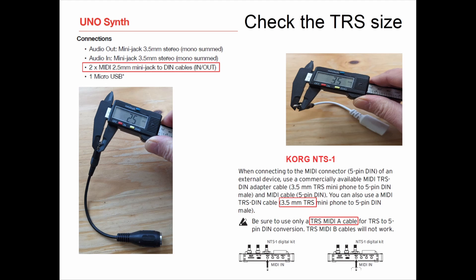If you look in your manual, for example, right here out of the IK Multimedia Uno Synth — in the back of the manual it says it needs a 2.5mm mini jack. For the Korg NTS-1, it's a 3.5mm TRS jack, and it also tells you that it's a TRS MIDI Type A cable.